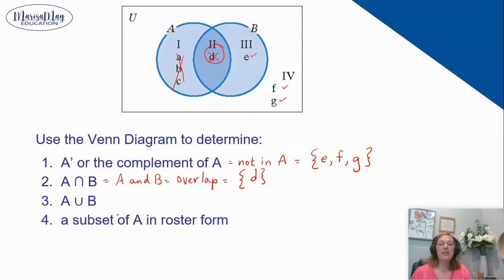Number three, we want the A union B. So this is everything in A and everything in B and everything in the overlap.